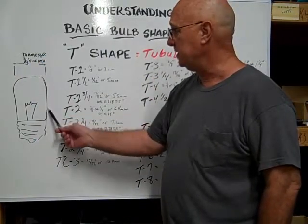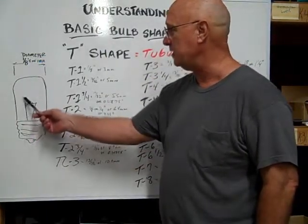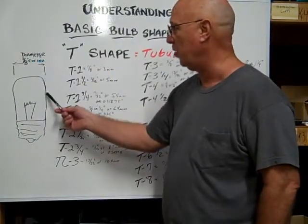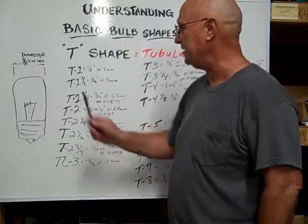That is the dimension across the diameter of the glass envelope, the globe of the bulb. It's measured in eighths of inches.